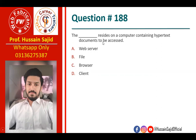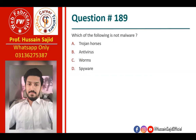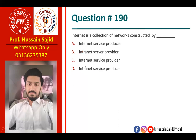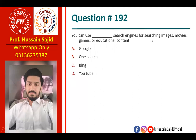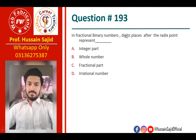The web server resides on the computer containing hypertext documents to be accessed. A malware question asks which of the following is not a malware. The internet is a collection of networks constructed by ISPs. Using a specific form eliminates multiple representations for the same value. In fractional binary numbers, digits after the binary point represent the fractional part.